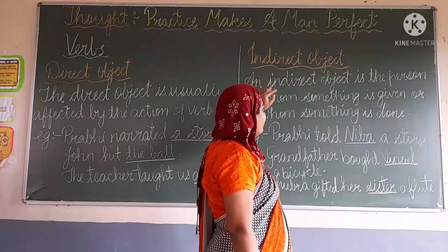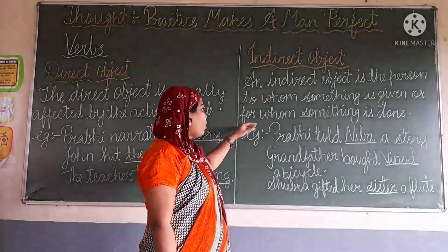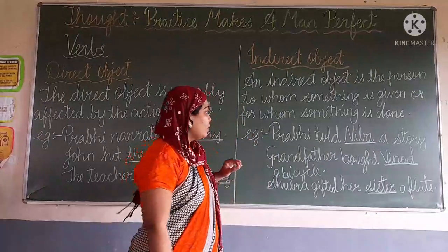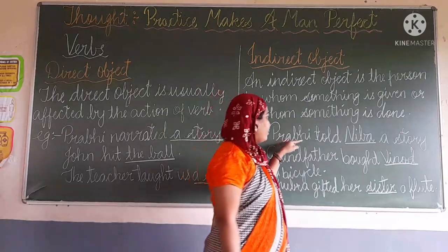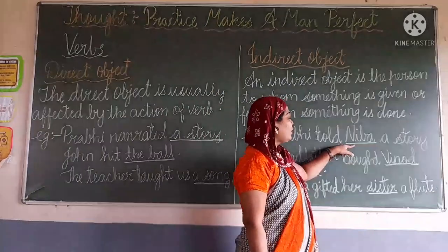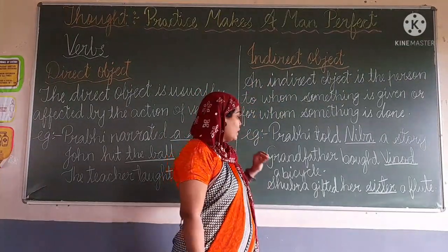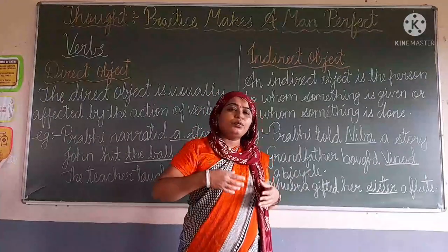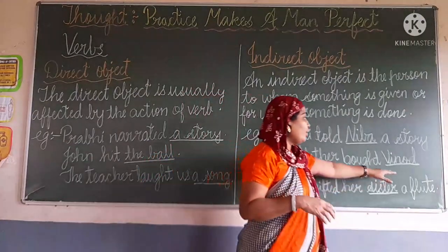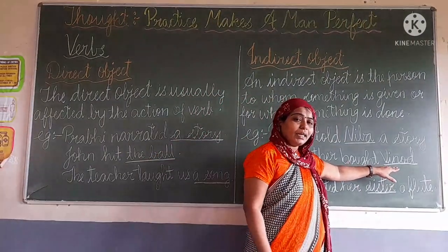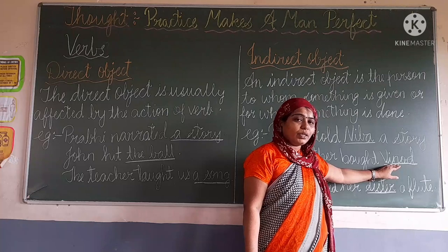As stated, we have to identify the person to whom something is given or for whom something is done. So what is done here? A story — Praveen told Nipha a story. So the word Nipha is the indirect object. Second example: Grandfather bought Vinod a bicycle. For whom did grandfather buy a bicycle? He bought a bicycle for Vinod. Vinod is the name of the person, so Vinod is the indirect object.